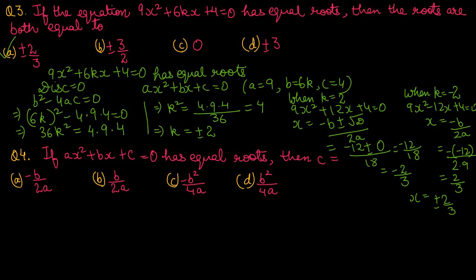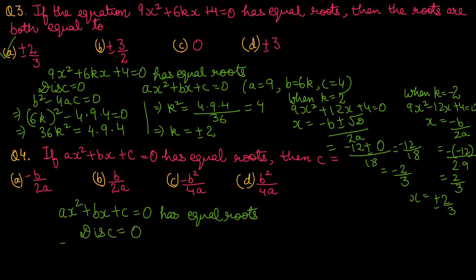Question No. 4: if ax² + bx + c = 0 has equal roots, then discriminant must be 0, so b² - 4ac = 0. This gives b² = 4ac. We want to find the value of c, so keeping c on one side: c = b²/4a. Option number d is the correct one.